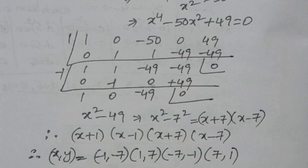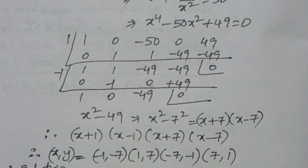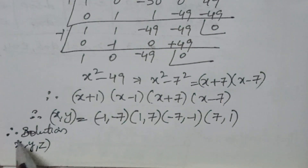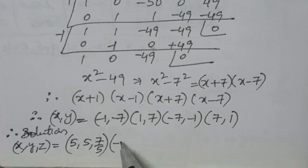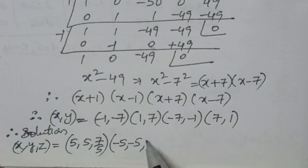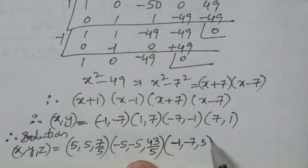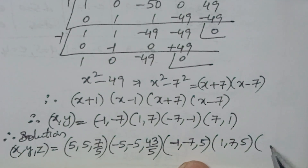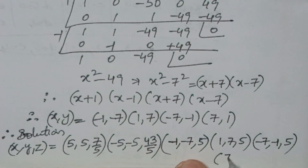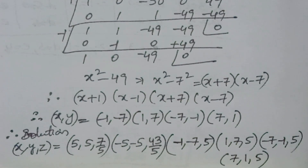From these x values, the y values follow. The complete solutions (x, y, z) are: (5, 5, 7/5), (−5, −5, 43/5), (−1, −7, 5), (1, 7, 5), (−7, −1, 5), and (7, 1, 5). I hope you understood the video. Thank you for watching IONCG Max. If you liked the video, subscribe to the channel and share it with your friends.